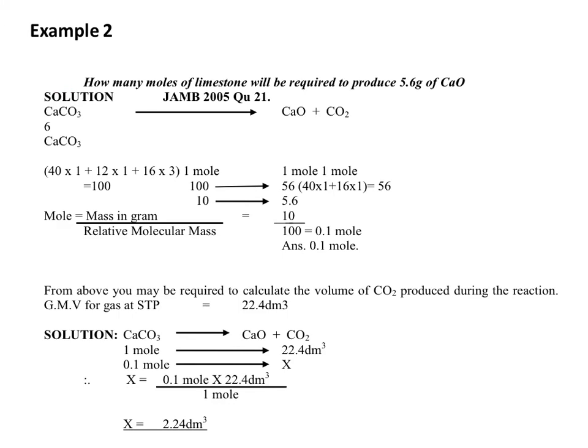Example 2. How many moles of limestone would be required to produce 5.6g of calcium oxide? The first step is to write the equation of the reaction. We have calcium carbonate, CaCO3, which is limestone, that decomposes to give you calcium oxide and carbon dioxide.